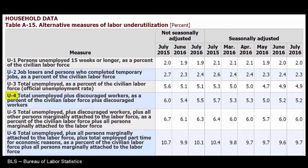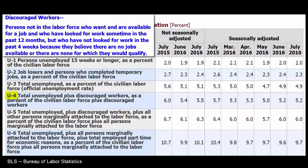U4 includes total unemployed plus discouraged workers. Discouraged workers are persons not in the labor force who want and are available for a job and who have looked for work sometime in the past 12 months, but who are not currently looking because they believe there are no jobs available or none for which they would qualify. In July 2015, that number was 6%, and in July 2016, it was 5.2%.